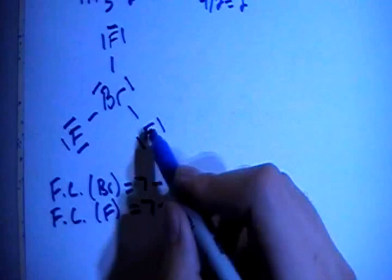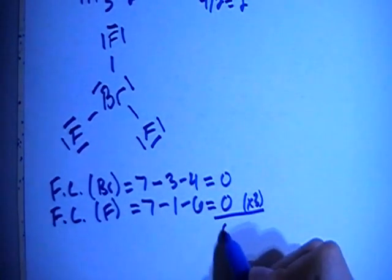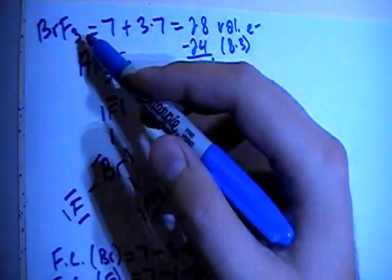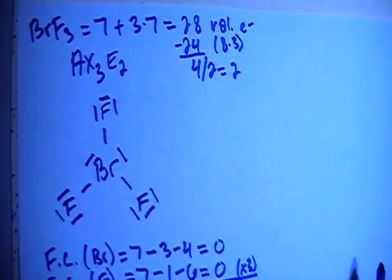Times that by 3, because there's 3 of those fluorines, still sums up to be 0, which is what we're looking for, because this is a non-charged particle. Alright, now we can go ahead and talk about the shape.